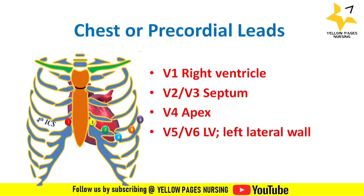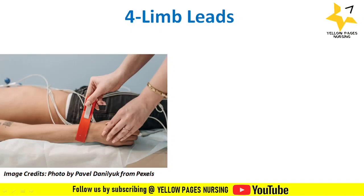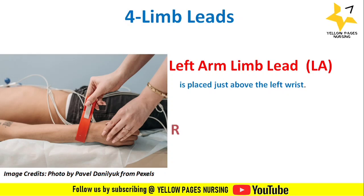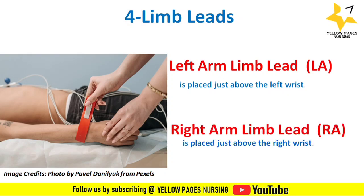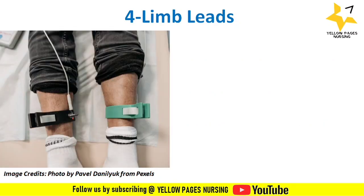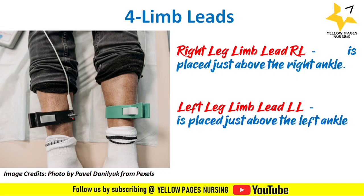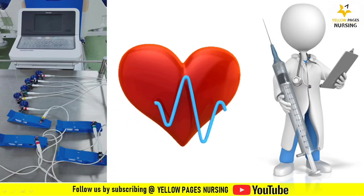For limb leads: the LA lead is placed just above the left wrist, the RA lead just above the right wrist, and the RL lead just above the right ankle. Remember to apply gel before attaching these leads, as it acts as a coupling between the electrodes and skin to aid transmission of electrical activity.